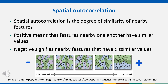An important definition is that of spatial autocorrelation, which is the degree of similarity of nearby features. In the context of cancer cluster analysis, this would mean how similar the number of cancer cases or cancer rates are in each geographic unit.